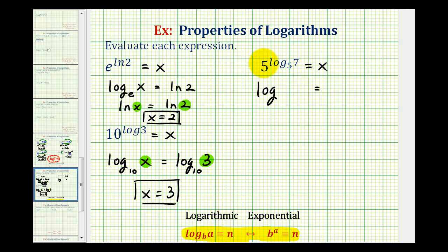Our log will have base five. A log is an exponent, so the exponent is log base five of seven. This is equal to x, so the number part of the log is x. Therefore, x is equal to seven.